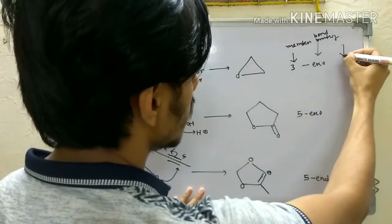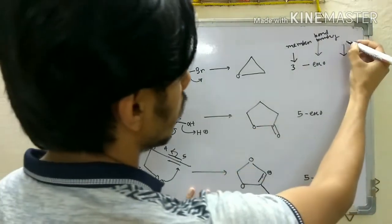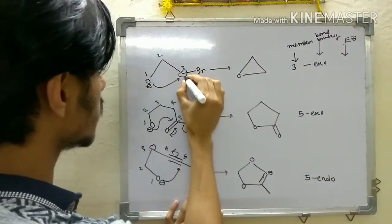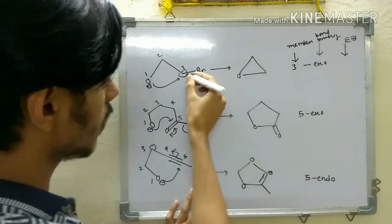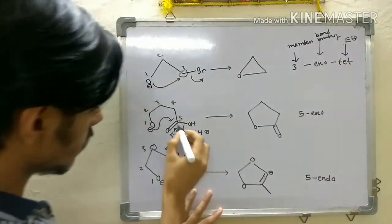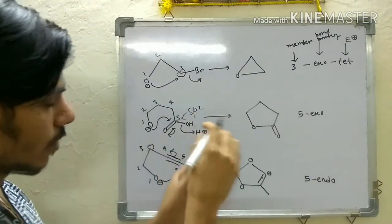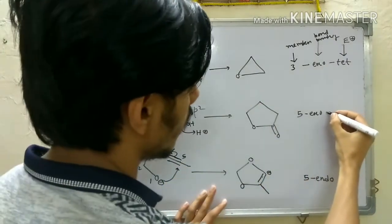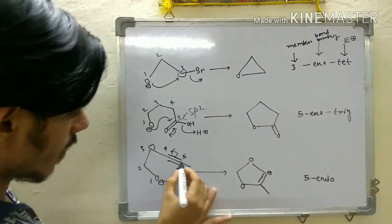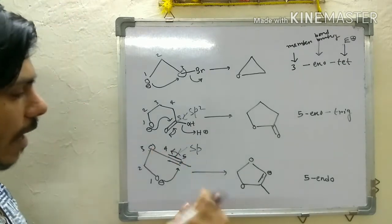The third part of the nomenclature is the hybridization or type of the electrophile. If the electrophilic atom is a tetrahedral center, it is sp3 — we call it 'tet.' If it is an sp2 center, it is a trigonal center — we call it 'trig.' And if the electrophilic center is sp and diagonal, it is called 'dig.'